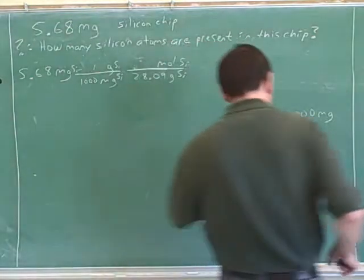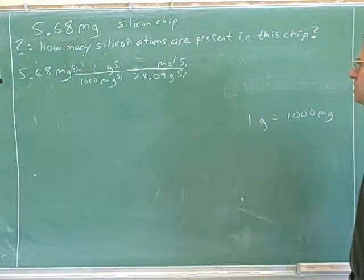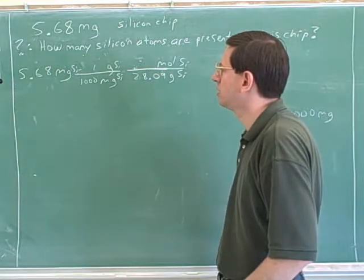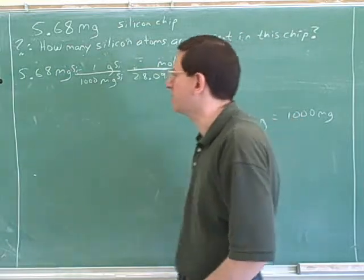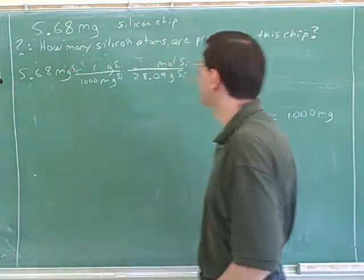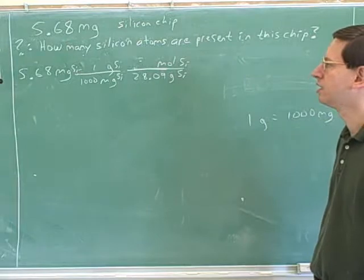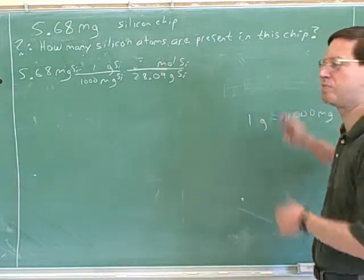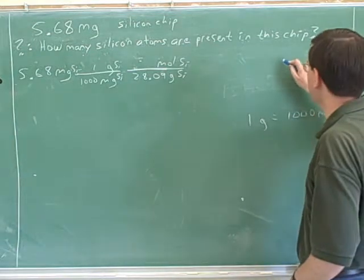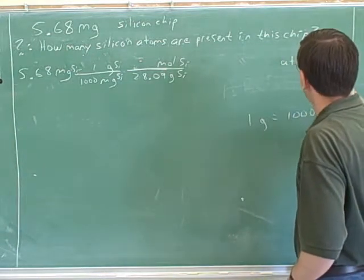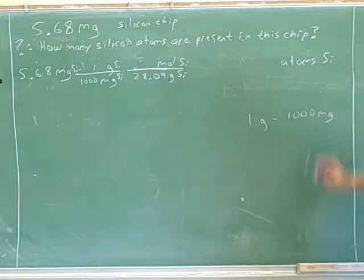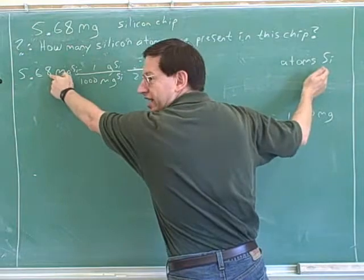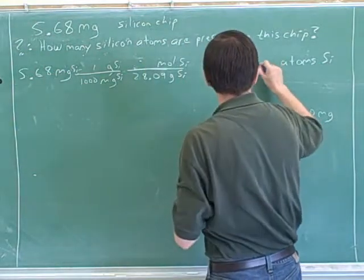Let's work that out a little bit more systematically. You used a lot of good techniques here. What were our starting units on this problem? 5.68 milligrams of silicon. And it's good that you wrote that down. What are our target units? Silicon atoms. I don't think you wrote that down, and that would have helped us to be more systematic. So over here on the right-hand side of the piece of paper, I should always write down the target units. Before we do any conversion ratios, we have to have the starting and the ending units — not just the starting, but also the ending units.